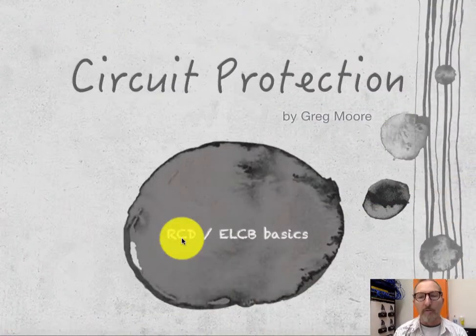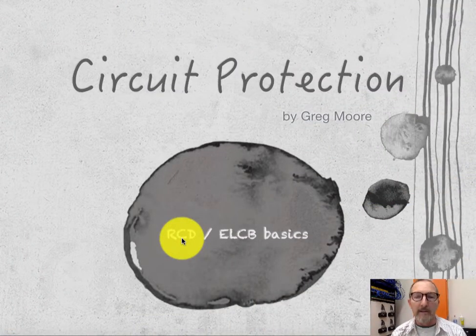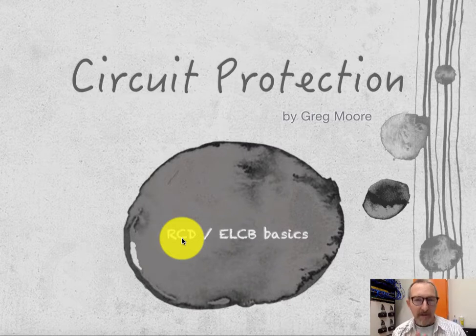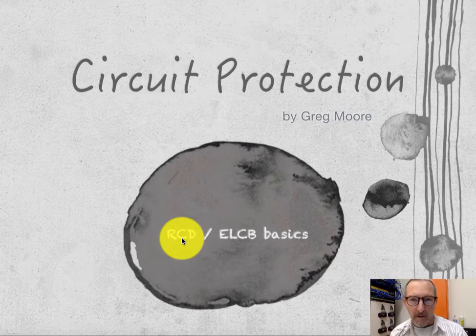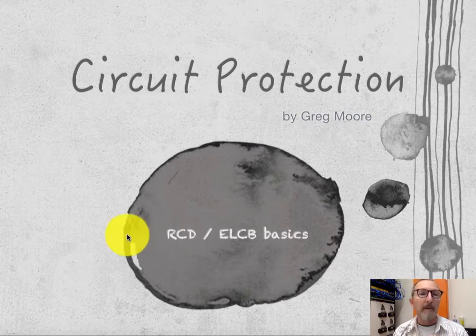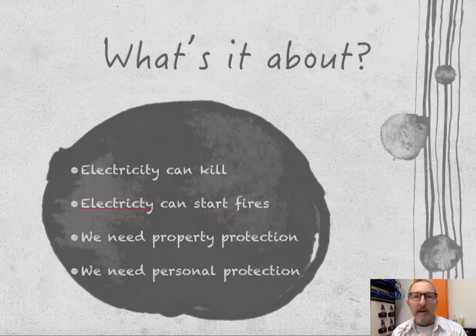Essentially we'll be looking at the difference between RCDs — residual current devices, sometimes known as earth leakage circuit breakers — and although the two devices have slightly different ways of functioning, they both have the same outcome: to protect human life against electrocution. We'll be looking at RCDs and ELCBs as opposed to circuit breakers in our building. So let's look at the first slide here.